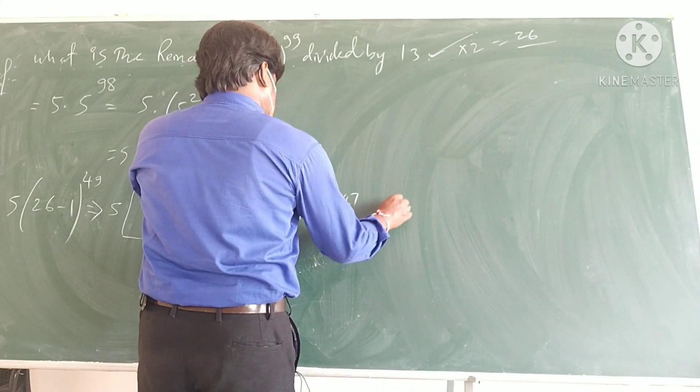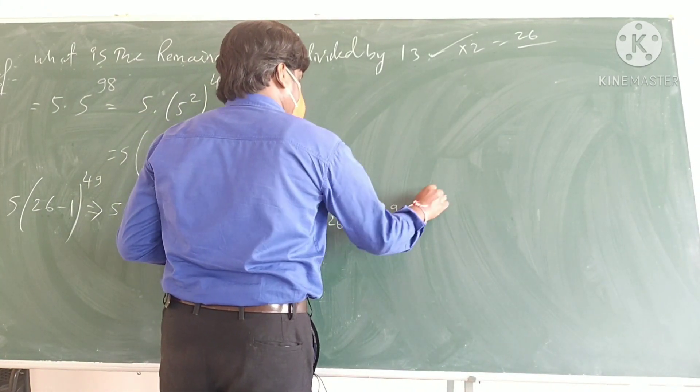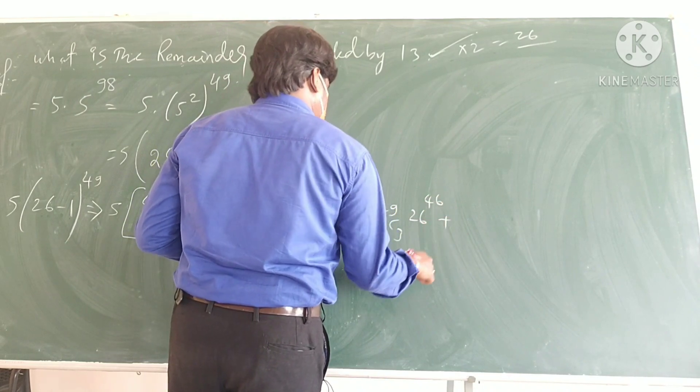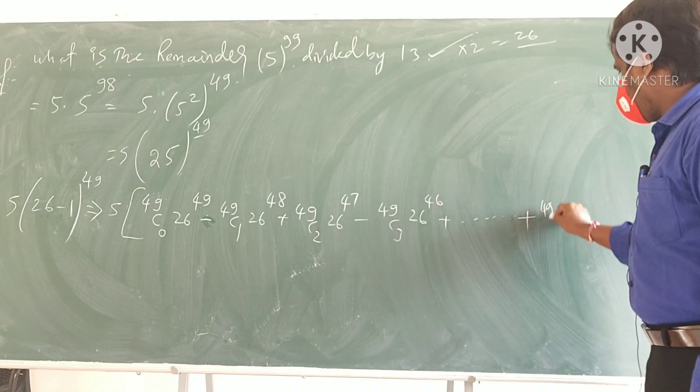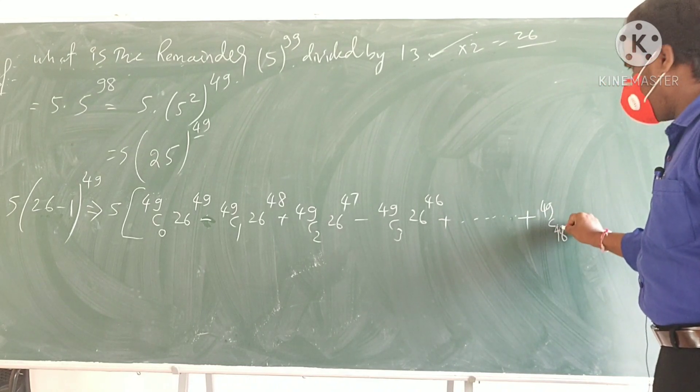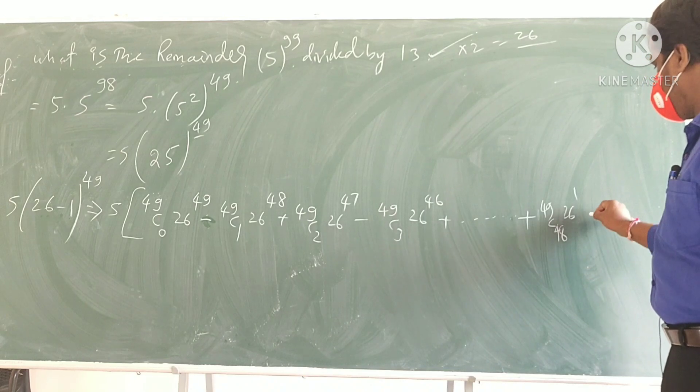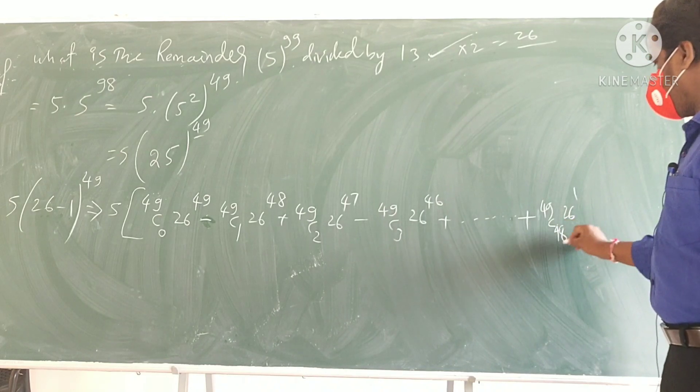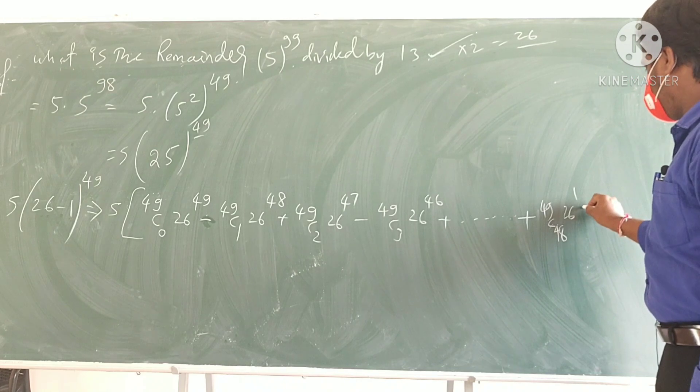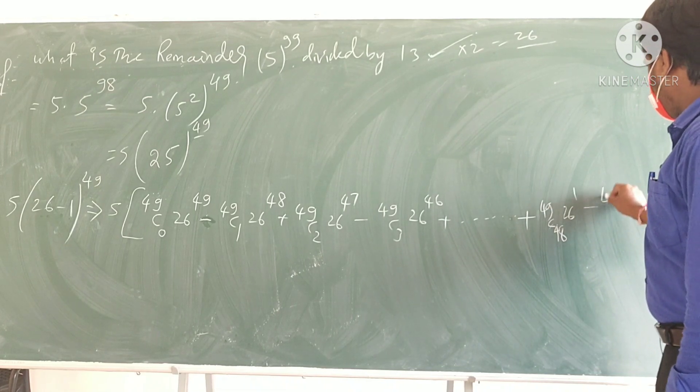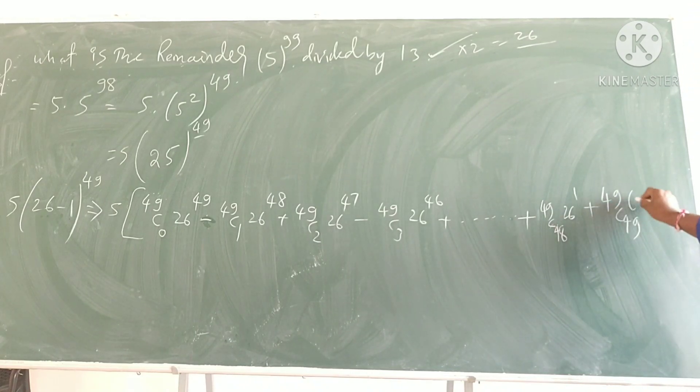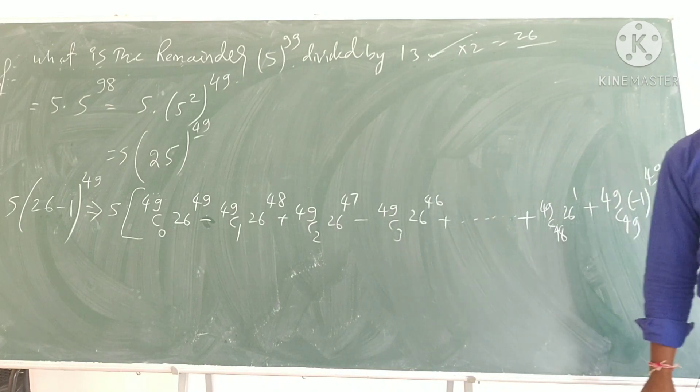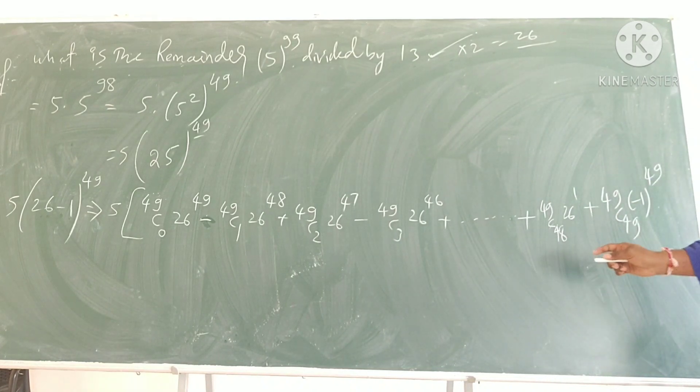You get plus, then you get 49 C 2, 26 to the power of 46, plus so and so, finally you will get 49 C 2, 26 to the power of 1, this is an even number, so no problem, minus 49 C 49, I get minus 1 power 49 I will get. Expansion you know, binomial expansion I did, binomial expansion.